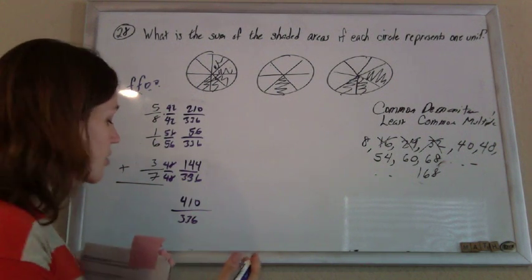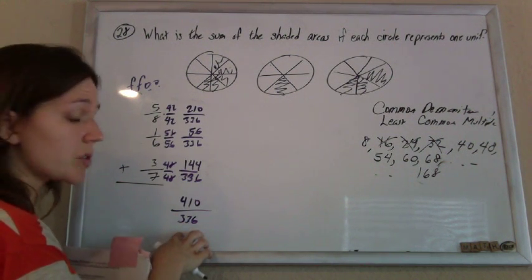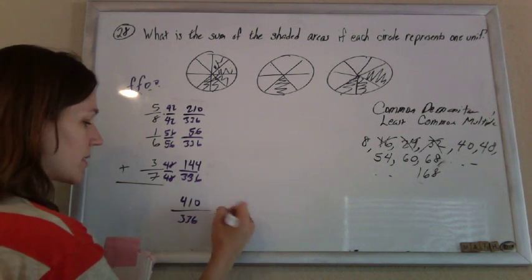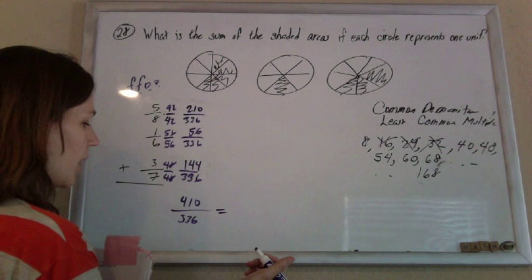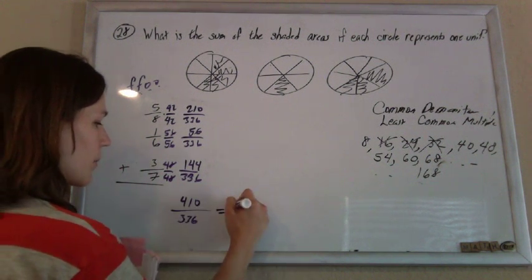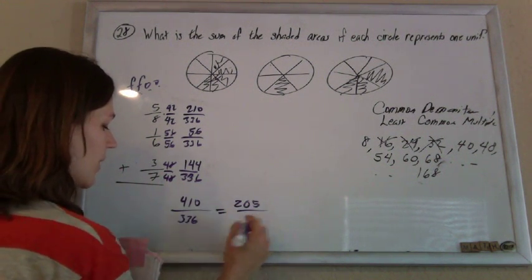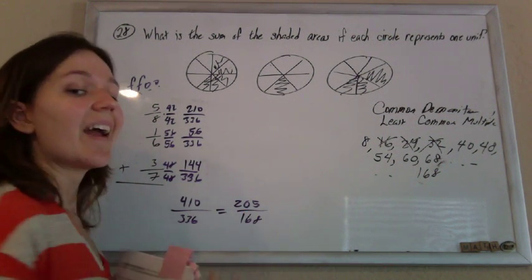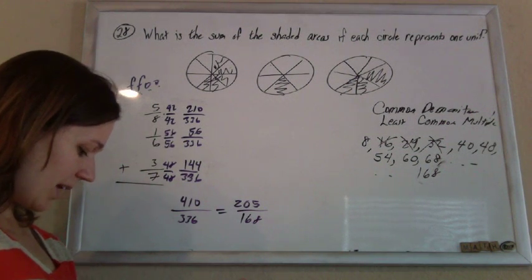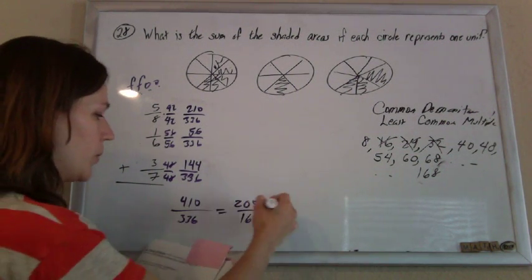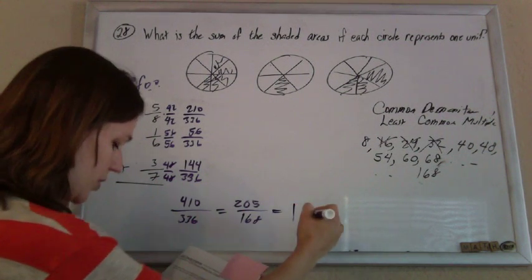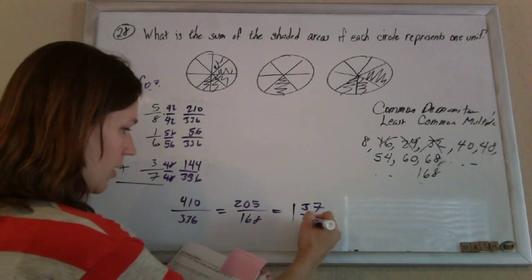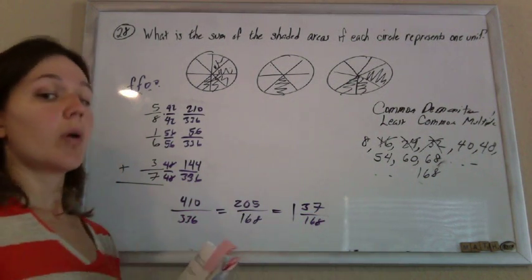Now they all have a common denominator of 336, which means I can add up all the numerators. 210 plus 56 plus 144 gives me 410. Now this is a fine answer, but you can see that it's not reduced. Since these last digits are both even, you can see it's divisible by 2. If you divide the top by 2, you get 205. If you divide the bottom by 2, you get 168. And that looks familiar. That is exactly what we got when we did it the first time. As a mixed number, it becomes the same answer we got the first time.